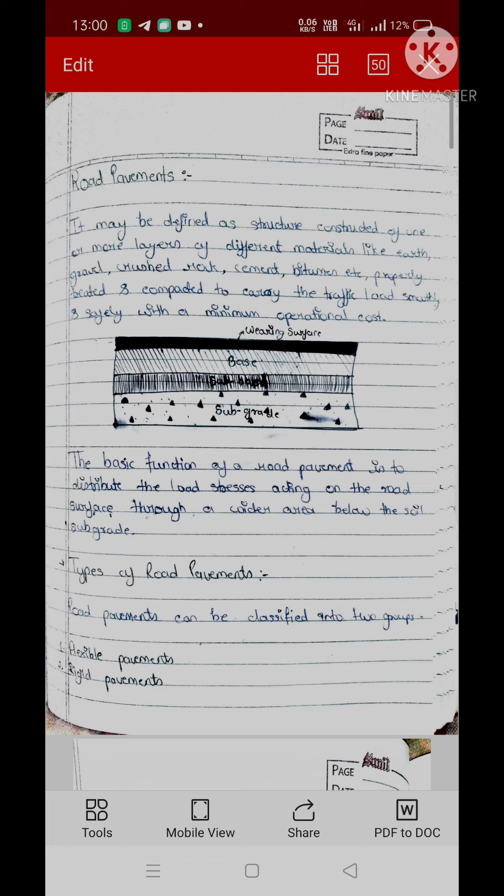The types of road pavement - road pavement has two types. One is flexible pavement and one is rigid pavement. Now we will learn one by one. First we will learn what is flexible pavement, how does it form, advantages and disadvantages. Similarly, we will learn rigid pavement.